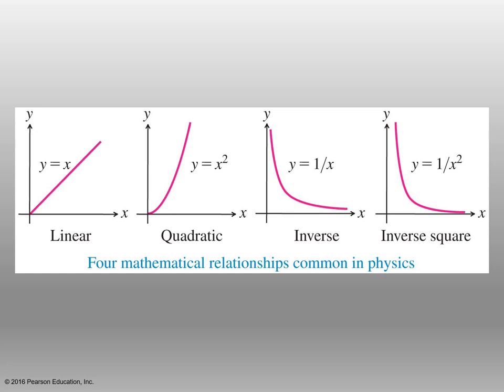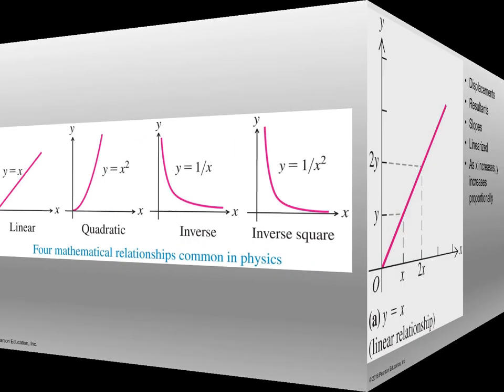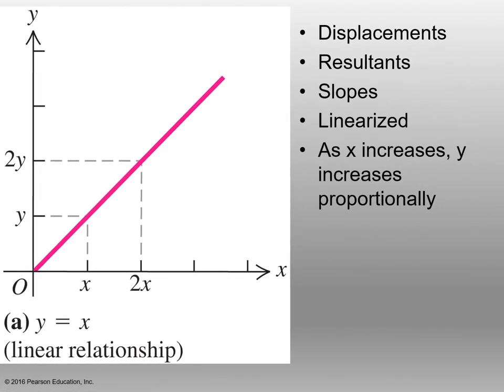Let's do an algebra review and look at some graphs. There are four mathematical relationships common in physics: a linear graph, y equals x; a quadratic graph, y equals x squared; an inverse graph, y equals 1 over x; and an inverse square graph, y equals 1 over x squared. Linear relationship graphs usually deal with displacements and resultants — when you draw two vectors and connect them, that line is your resultant. As x increases along the x-axis, y increases proportionally.